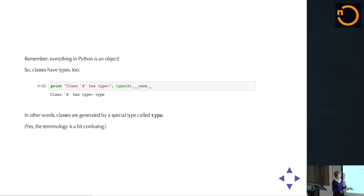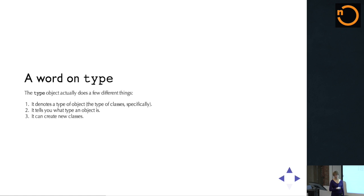Everything in Python is an object, so therefore classes should have types too. If we look at the type of A, we see it is of type 'type'. This is kind of confusing because a lot of people use the term type in a general sense, but in Python there's also the specific term of type. There are sort of three different ways that type can be used: first, it denotes the flavor of object; second, as a function to tell you the type of particular instances; and finally, you can use type to create new classes — that's the interesting part.